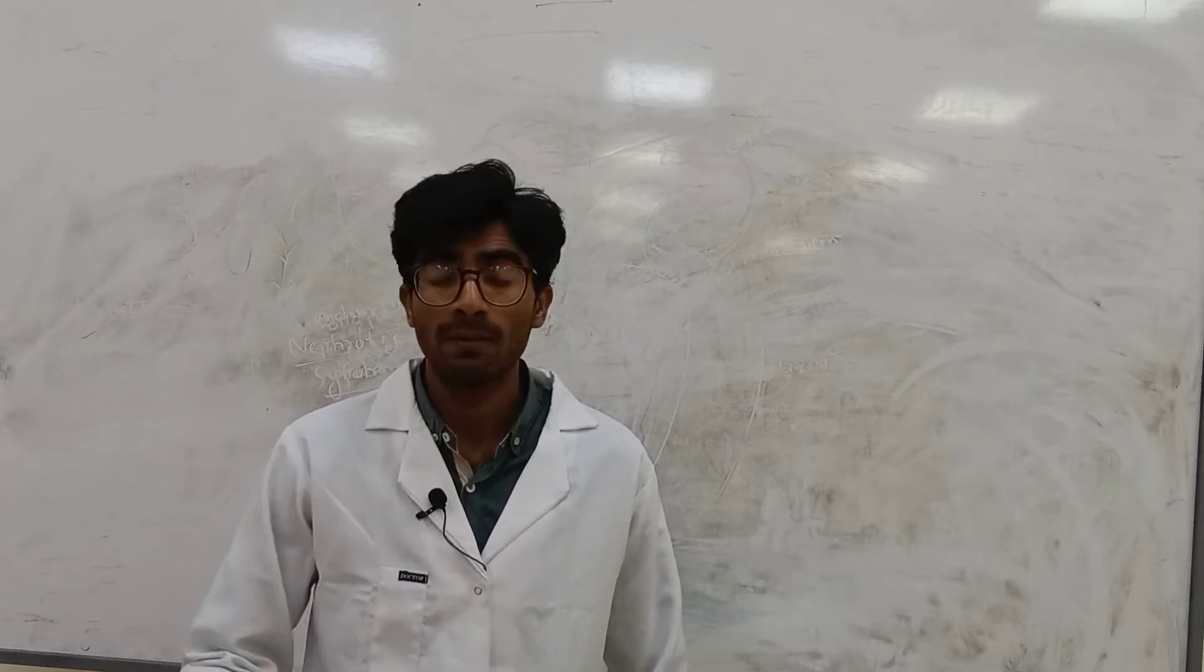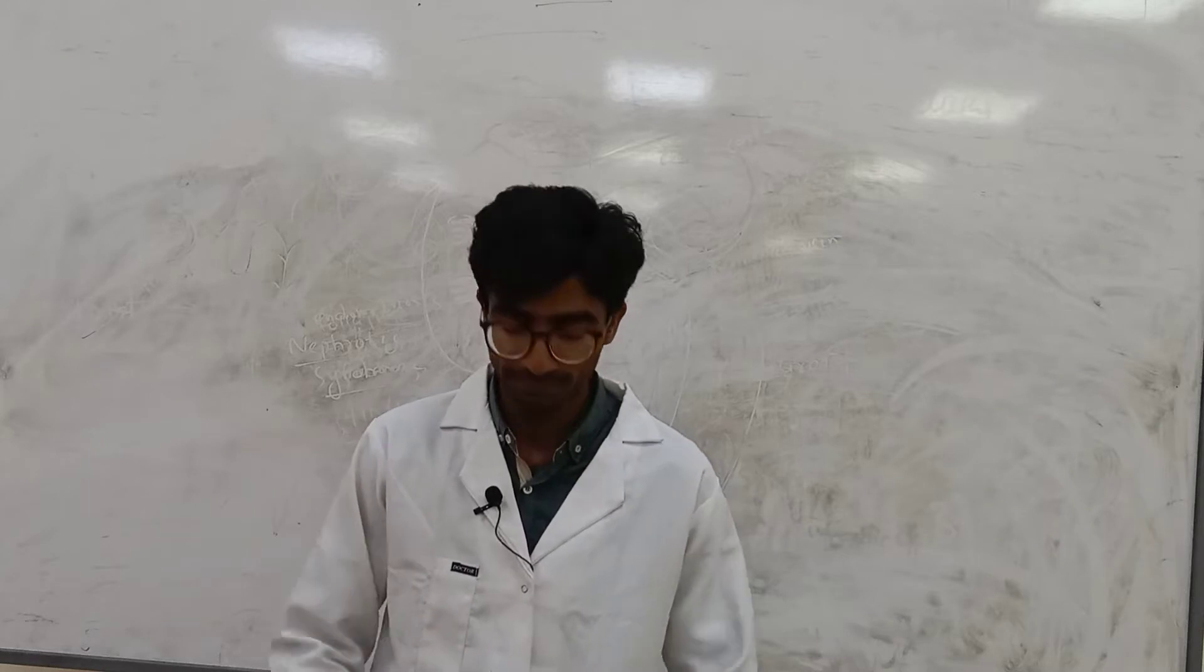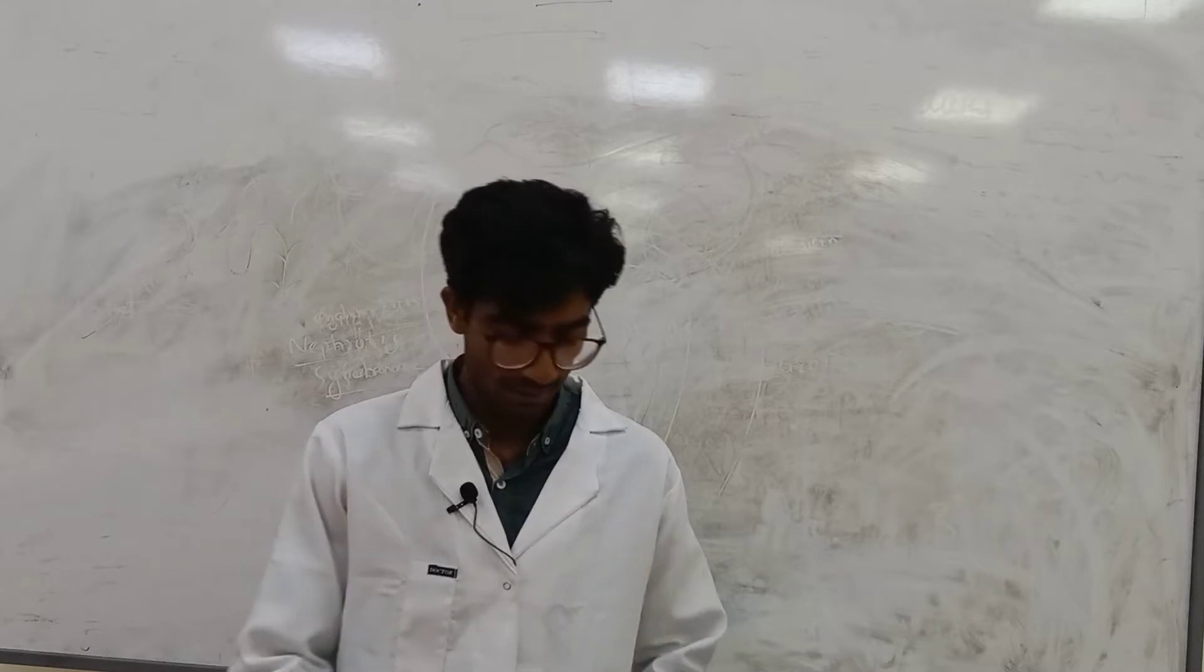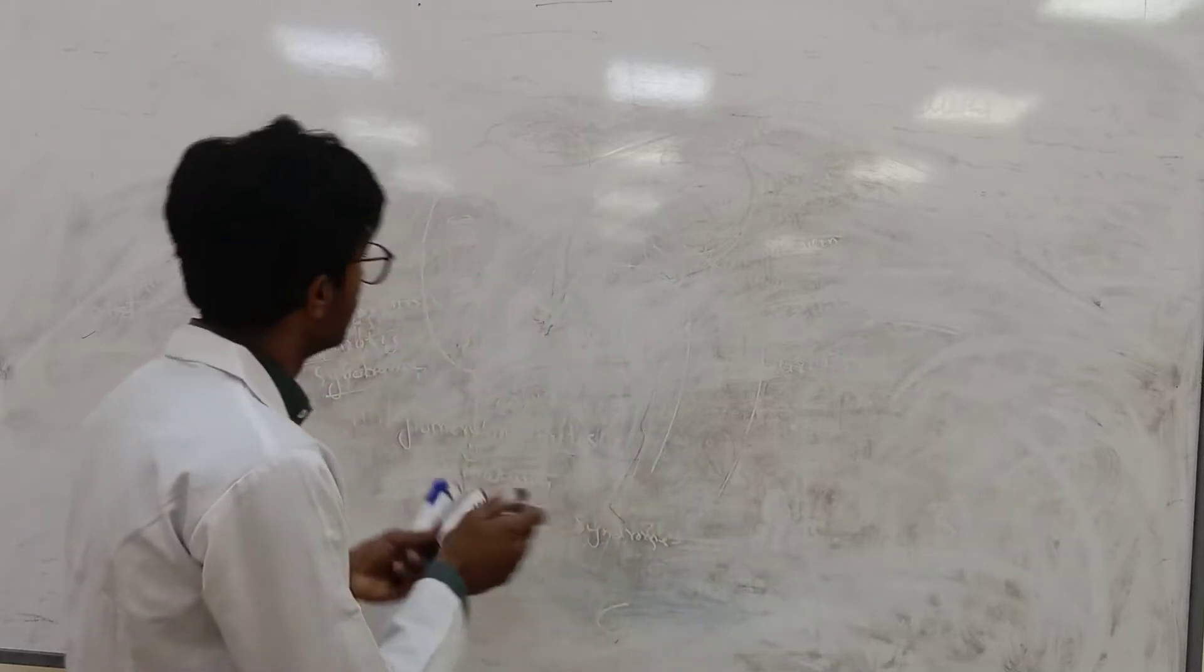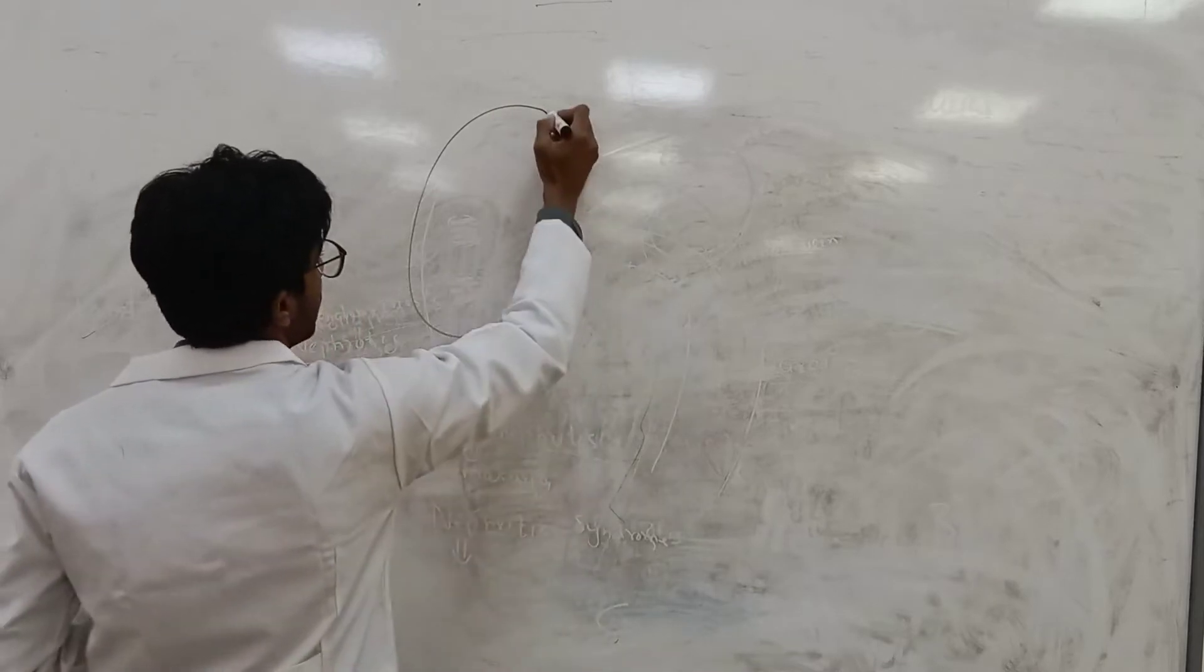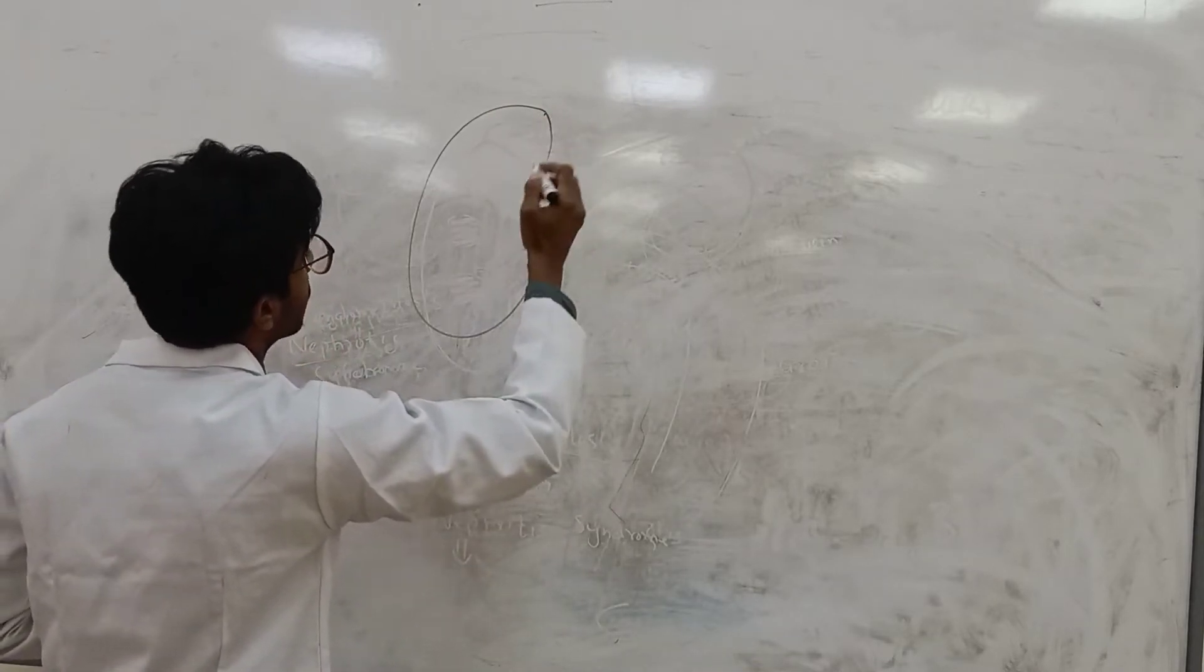There are abnormality symptoms due to kidney. I want to explain to you what is the structure of kidney. Simply, kidney, here the kidney structure, this is a renal cortex.